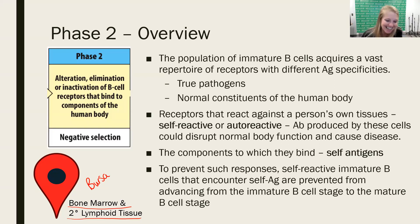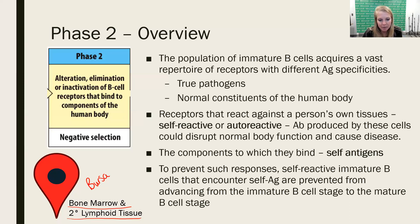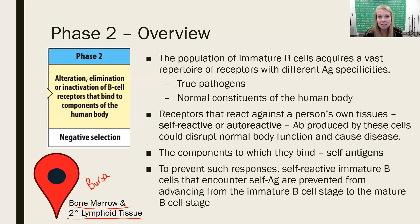Let's talk about what happens during phase two, during this very important education and development of our B-cell now that it has been made and has a B-cell receptor. We have an immature B-cell entering phase two. Our population of B-cells can't be immature — it has to be trained to recognize pathogen. Our population of immature B-cells really has to have a wide repertoire of receptors with many different antigen specificities, and we want to recognize any true pathogen. But there's no reason to think that some of these specificities can't be for self-tissue and normal constituents of the body.